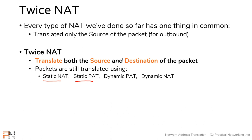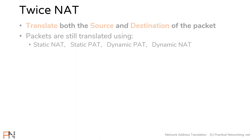The translations are still using the same types of NAT that we've already discussed, so there's nothing new. If you understand how these NATs work, then you understand how the actual translation is being done. The only difference is with a twice NAT you're doing it twice — once on the source and once on the destination.